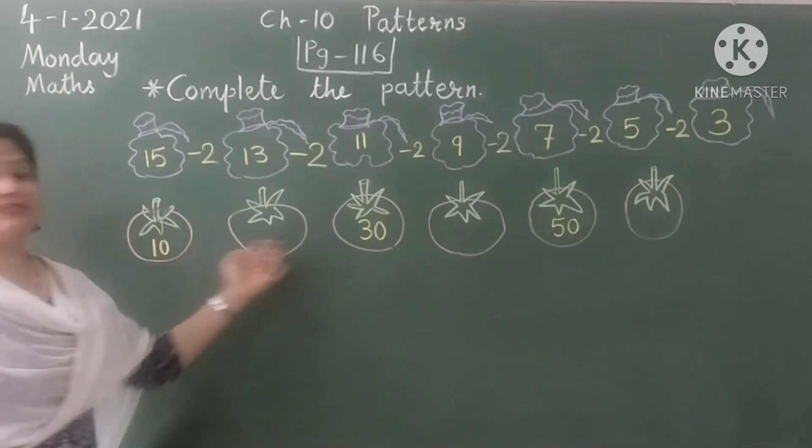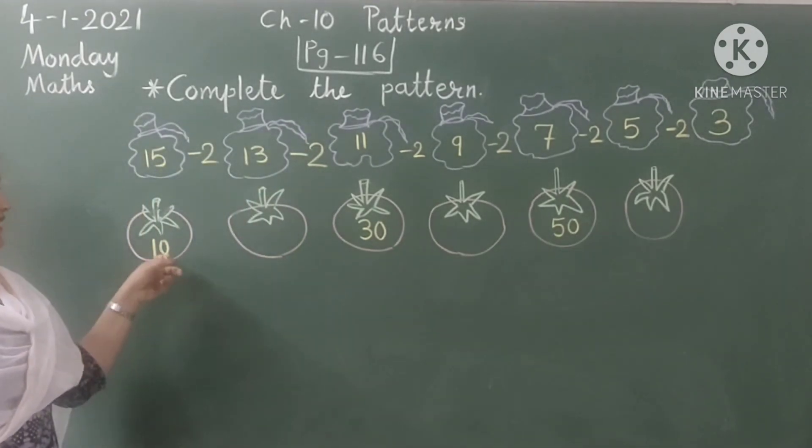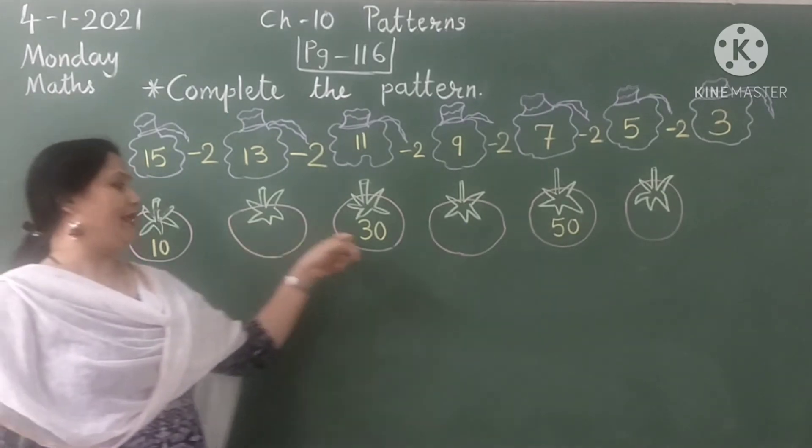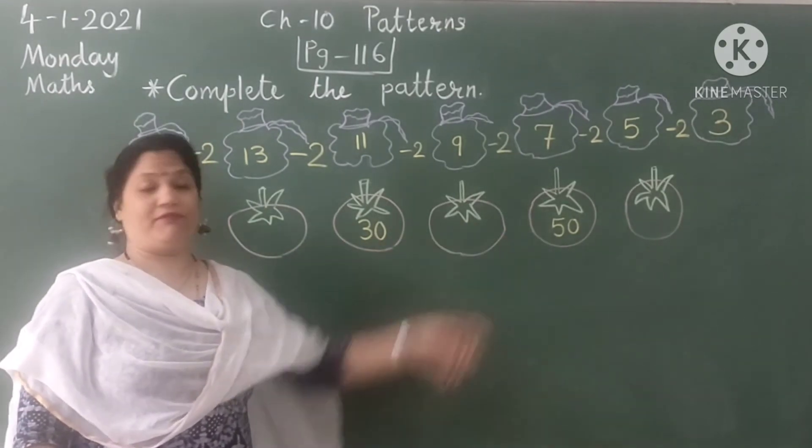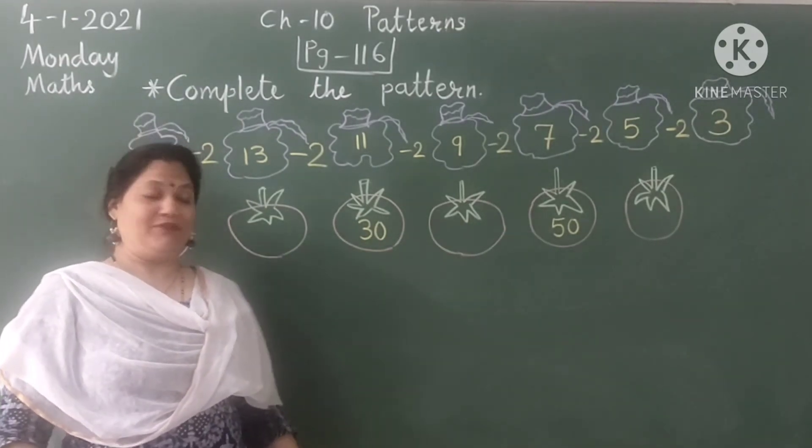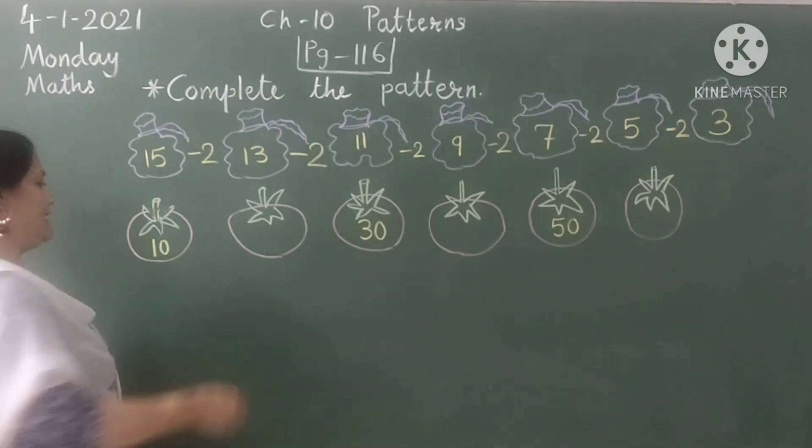Now let's see here. Beautiful tomatoes are given. 10, blank, 13, blank, 15. What does it mean? We have to add 10 numbers in each tomato. 10 plus 10, 20.